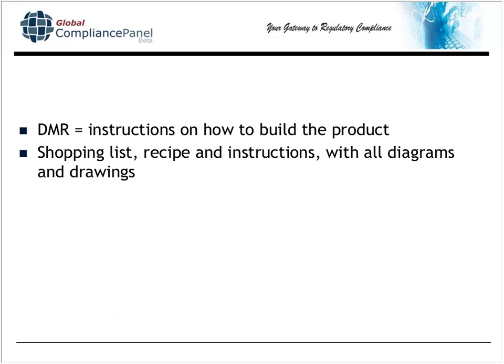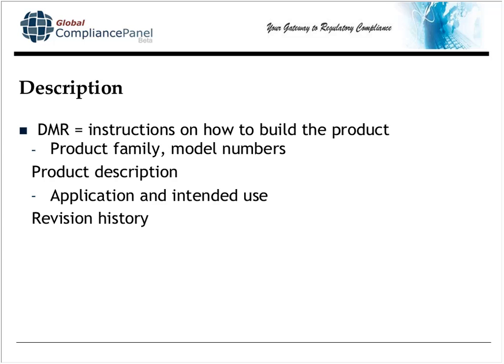Moving now to the DMR. The DMR is instructions on how to build your thing. A better way to look at it is if you're making a cake: you have the shopping list, which is the parts you need; the recipe and instructions, which is how to make it; and since the device isn't really a cake, you're going to have things like diagrams and drawings to assist in manufacture.